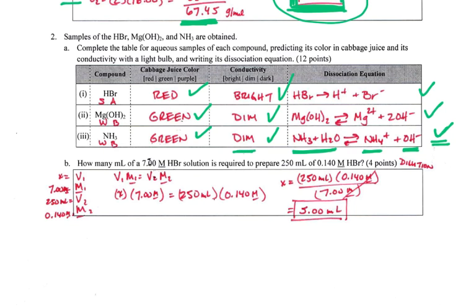The last part is how many milliliters of 7 molar HBr solution is required to prepare 250 milliliters of 0.14 molar HBr. Well, with that kind of a problem, you can see that that's got dilution. We're taking one kind of a strong solution, a 7 molar HBr solution, and we're diluting it until it's only 0.14 molar. The formula for that is volume times molarity equals volume times molarity. So the volume is X, molarity is 7 molar. The next volume is 250 milliliters, and the next molarity is 0.140 molar.